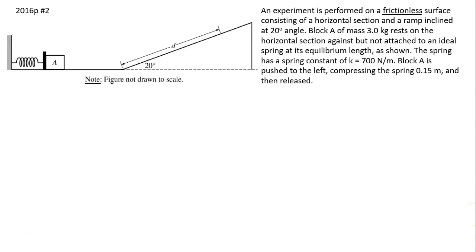Hi, this is Mrs. La Barbara. This is AP Physics Mechanics C. Today I want to go over an example of motion on the incline. An experiment is performed on a frictionless surface consisting of a horizontal section and a ramp inclined at 20 degree angle.